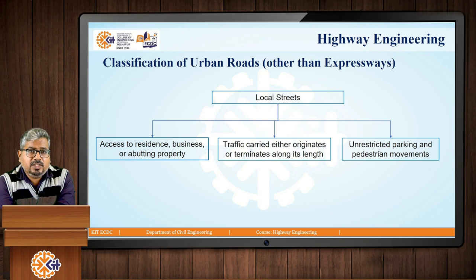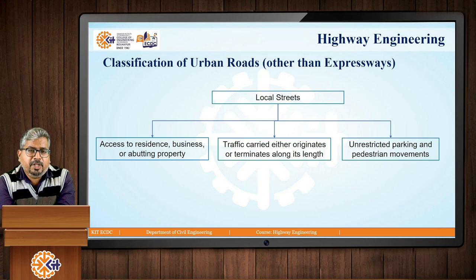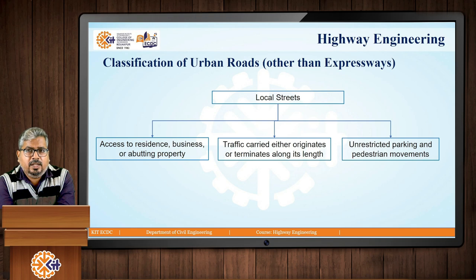Local streets provide access to residences, businesses, or abutting properties. Abutting property is property found next to any road or street. Traffic either originates or terminates along the street's length, and there is unrestricted parking and pedestrian movement in this case.